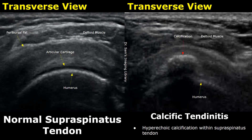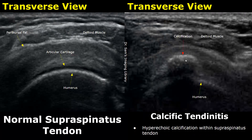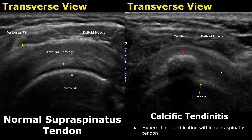Calcific tendonitis can occur in the supraspinatus tendon. In this case, we will find a hyperechoic calcification with posterior shadowing within the supraspinatus tendon.